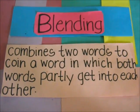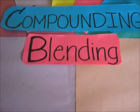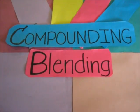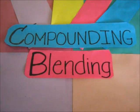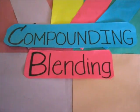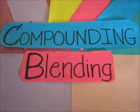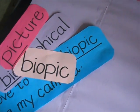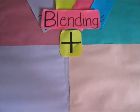Let's have the second type of word formation process, which is blending. In blending, we combine two words to coin a word in which both words partly get into each other. Let's differentiate compounding from blending. In compounding, when we join two words together we form a new word that may entirely have a new meaning, while in blending we blend two words together to literally combine their meaning into one word.